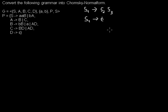To create the Chomsky Normal Form you have to do several steps. I will link in the video description videos where I explain each step. You can choose the order, but if you are unlucky you may have to repeat steps. So I choose a good order here. The first good step is to remove epsilon productions, and in this case it's a good starting point because we have only one epsilon production.